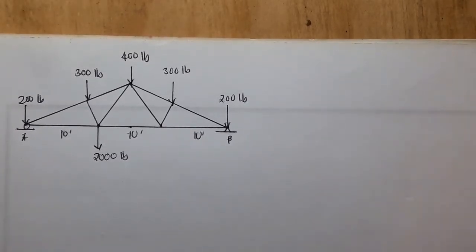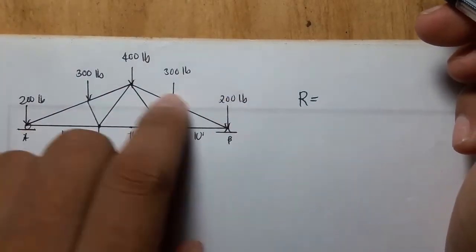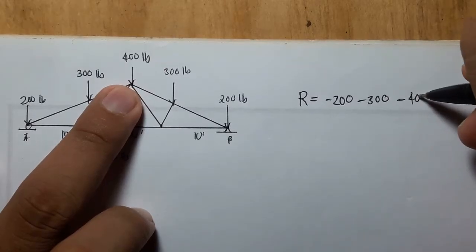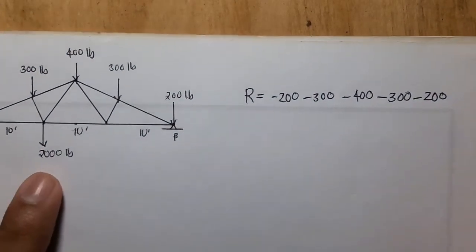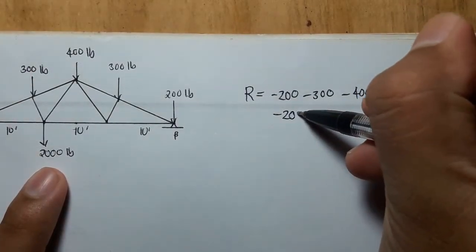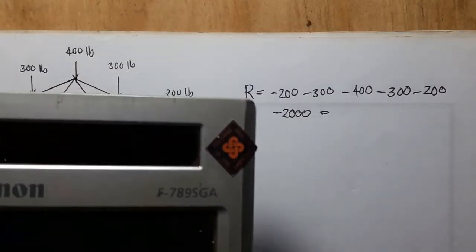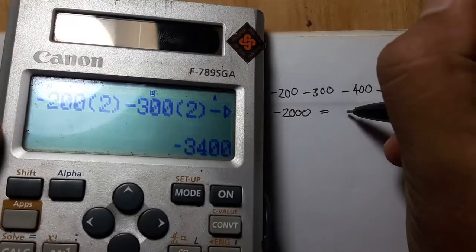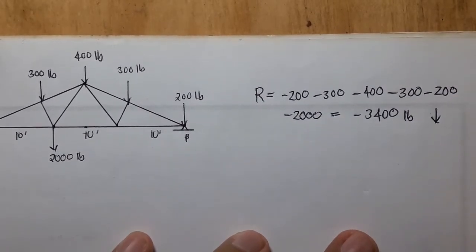First, we will solve for the resultant of the forces. The resultant is just the summation of these forces: 200, 300, 300, 300, 300, 300, and 200, then lastly minus 2000. All in all, the resultant is three thousand four hundred pounds going down, because obviously the forces are going down.